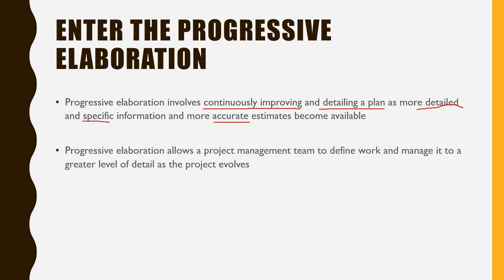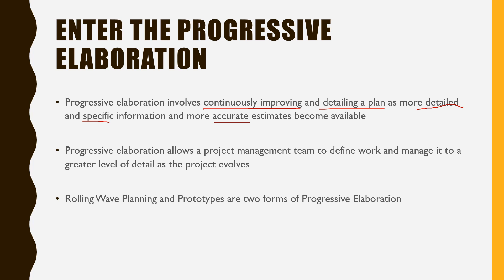Progressive elaboration allows the project management team to define work and manage it to a greater level of detail as the project evolves. You may not have all the information for a work package that's among the last ones to be delivered. As the delivery date for those work packages draws closer, you will have more information and will be able to plan in much better detail. It should be noted that rolling wave planning and prototypes are two forms of progressive elaboration. We've already discussed prototypes in a previous video — a link is in the description below.